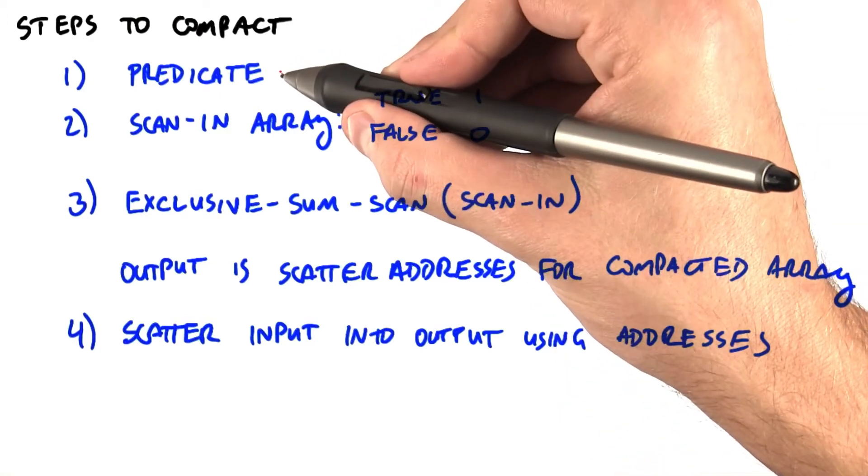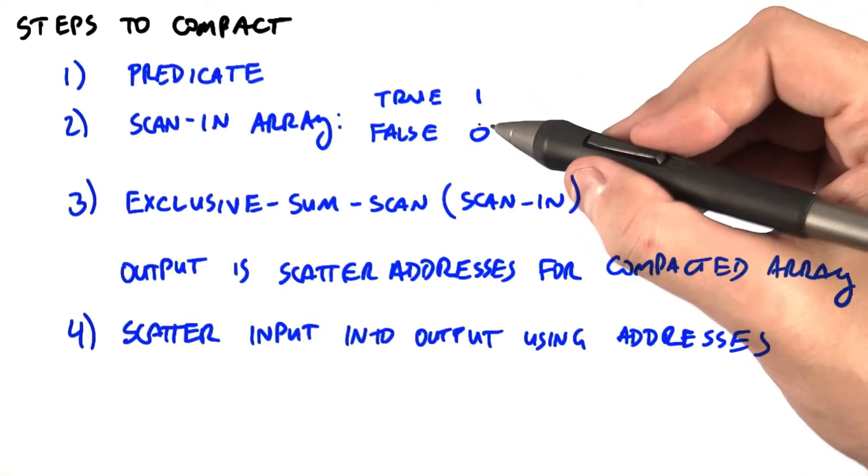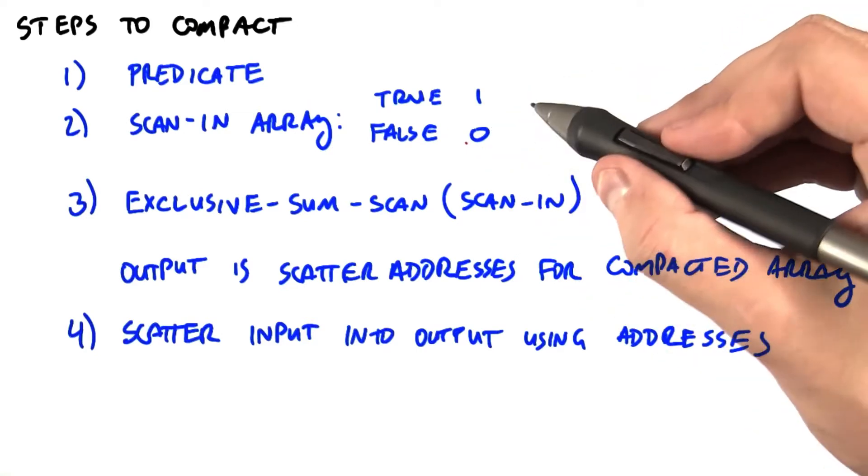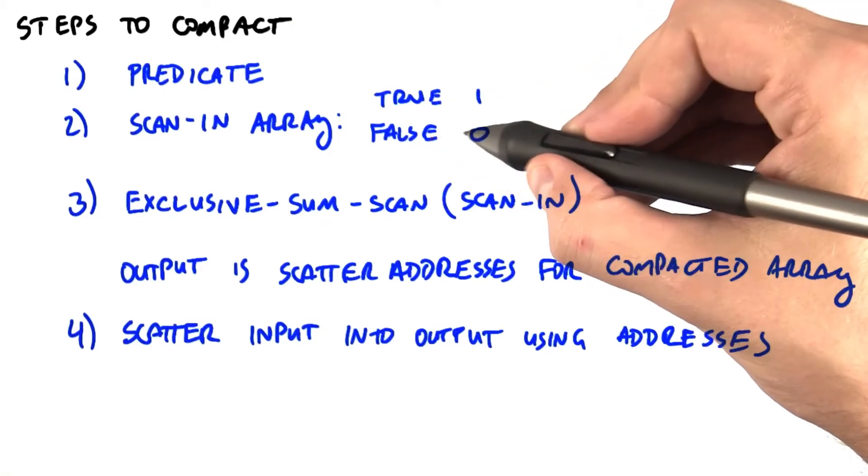First, we're going to run a predicate on each element of the input. Then we'll create a scan-in array, equal in size to the input. For each element of the input, if the predicate is true, put a 1 into the scan-in array. If it's false, put a 0.